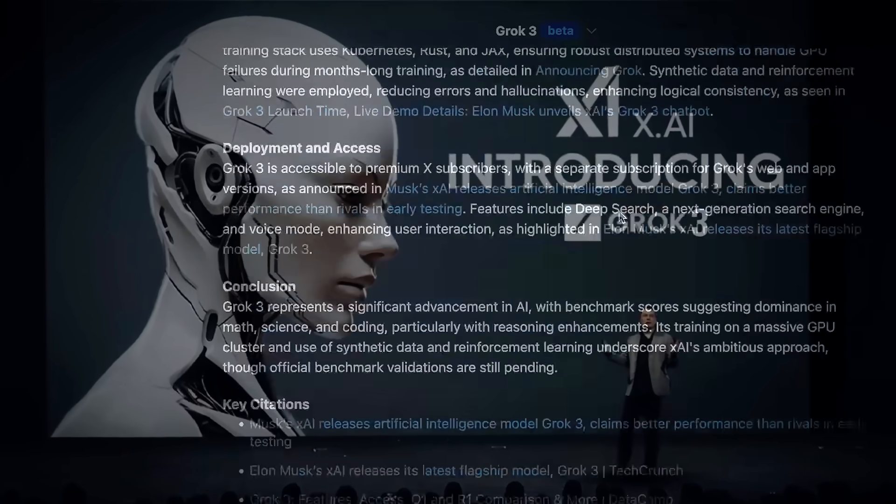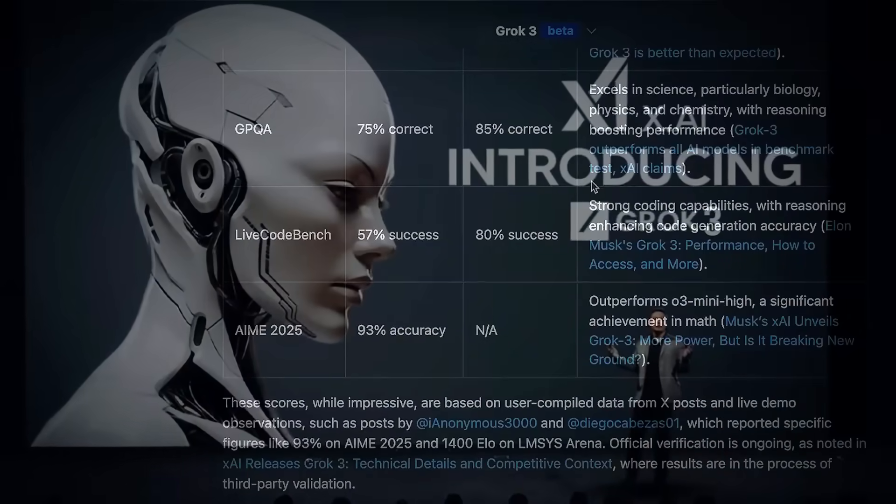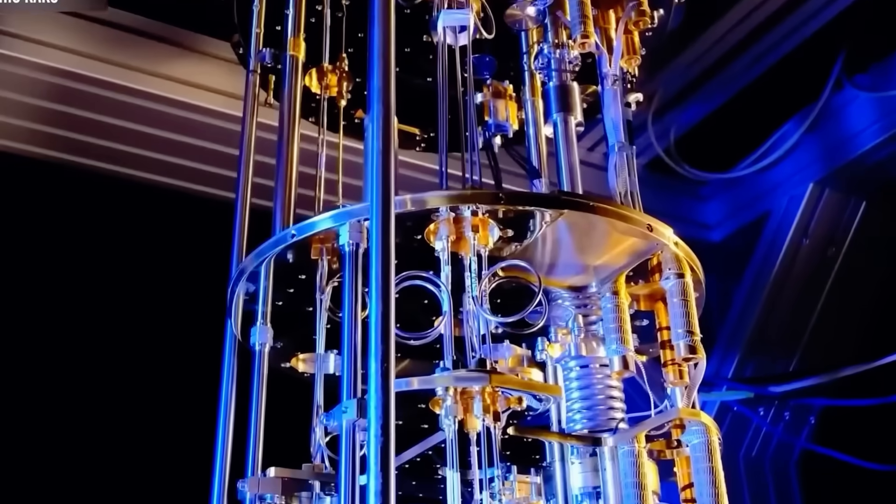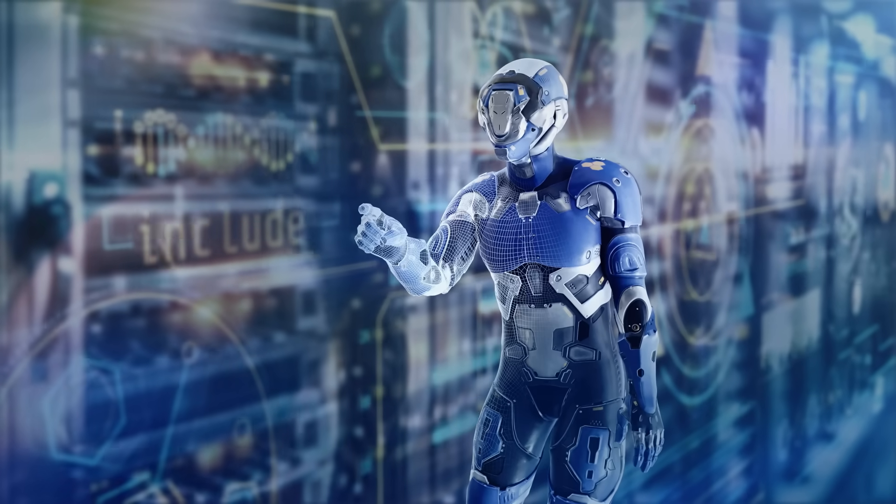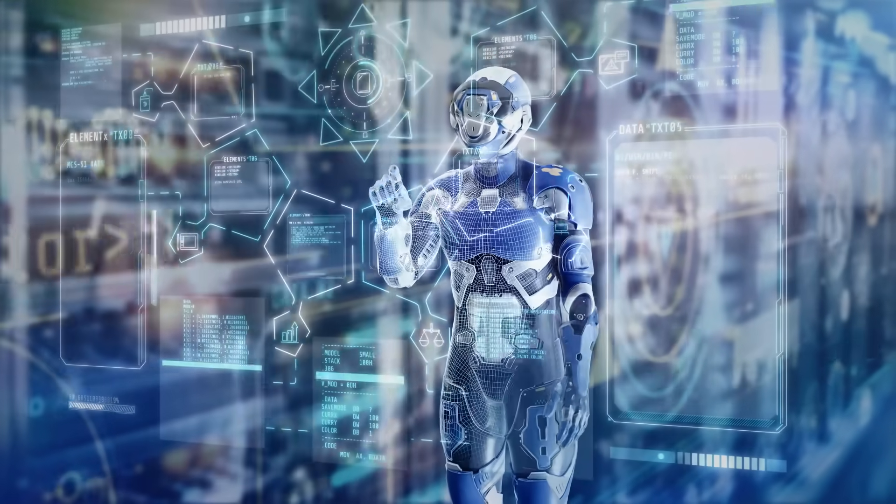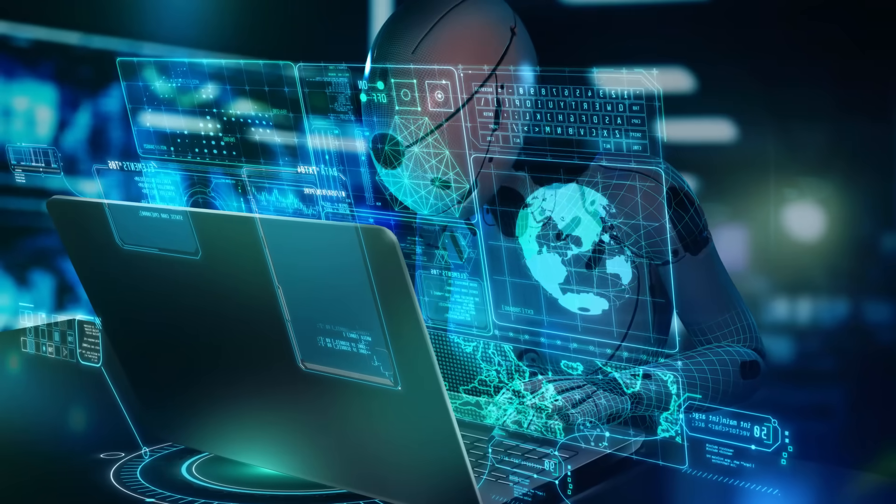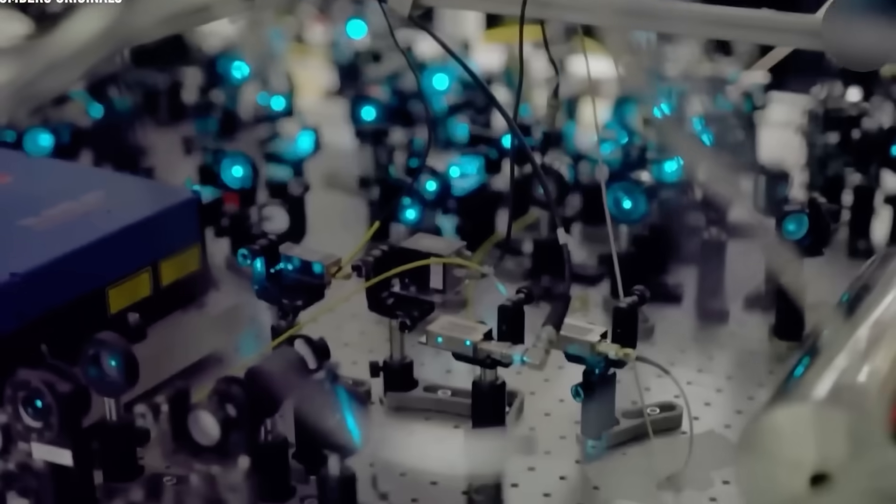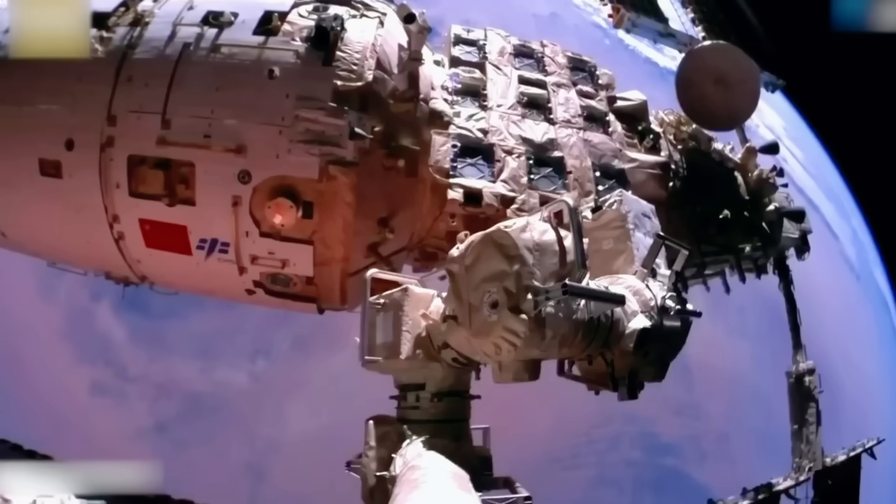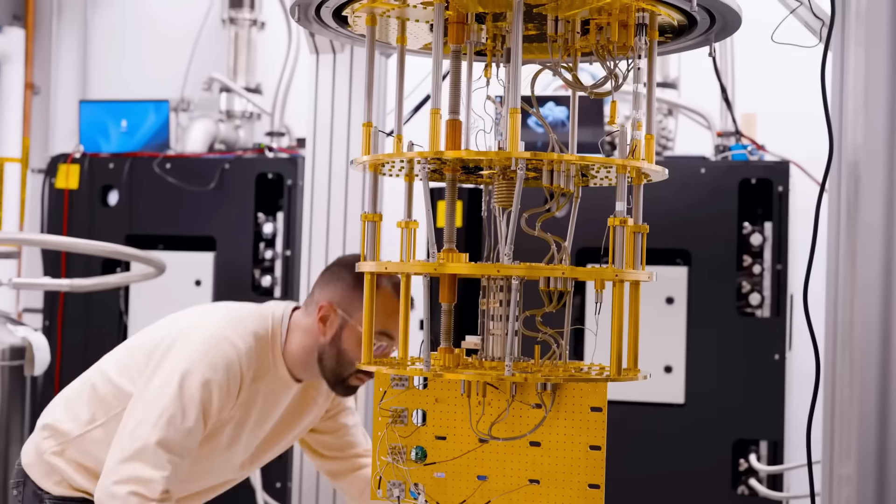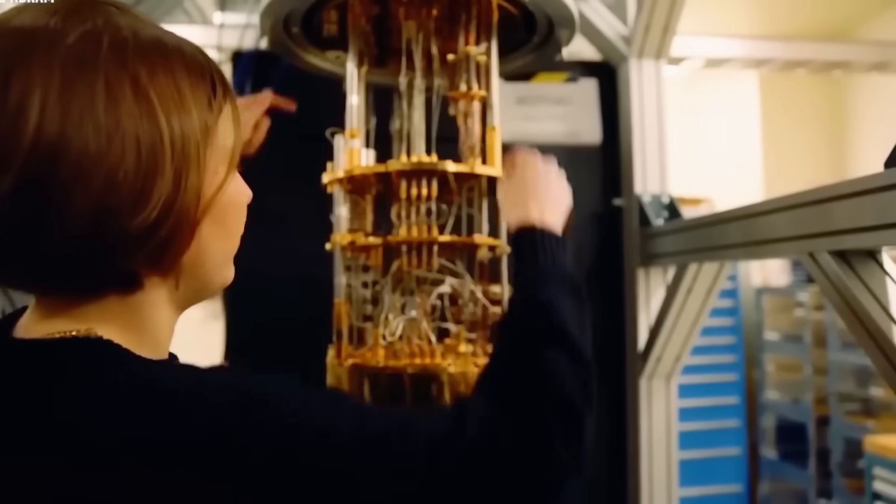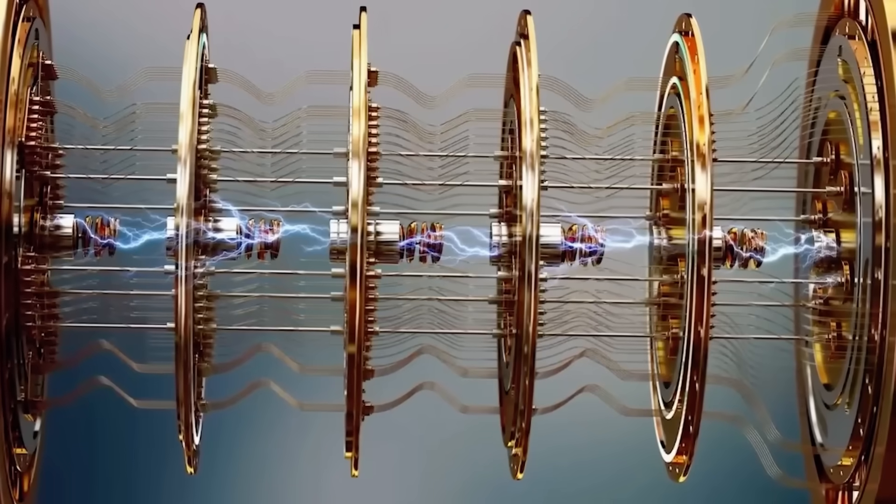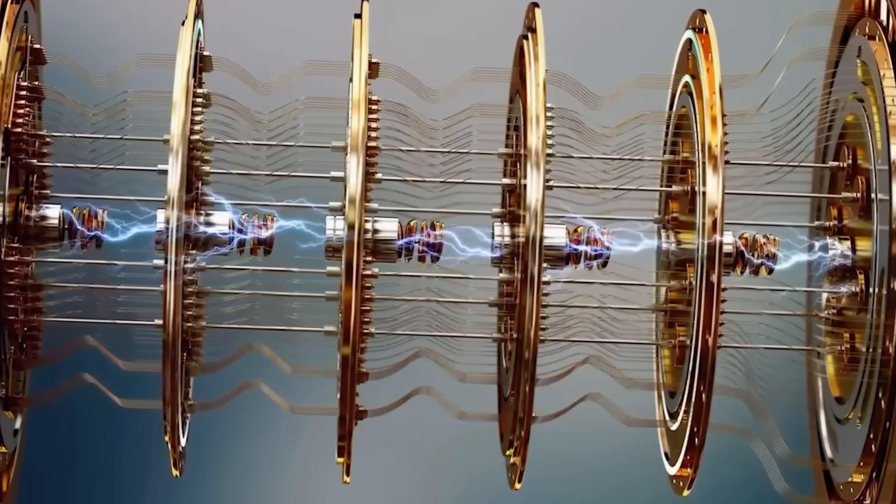The viral moment came when Grok 3's deep search capability, its most advanced analysis mode, specifically flagged these patterns as non-random. As if the AI was saying, this isn't natural. This isn't a glitch. Someone or something made this. But, what happens next is even crazier. What the pattern actually contains flips everything we thought we knew upside down. If you find these revelations interesting, don't forget to subscribe. We bring you the latest discoveries you won't hear anywhere else every week.